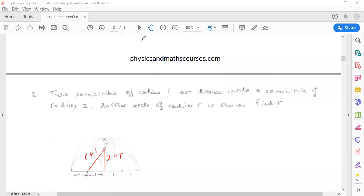And if I do Pythagoras in that right-angled triangle, I get r plus 1 squared is equal to 1 squared, which is 1 plus 2 minus r squared.